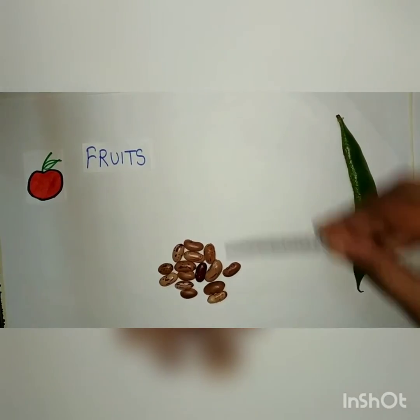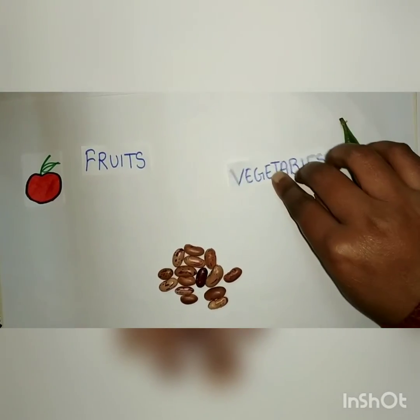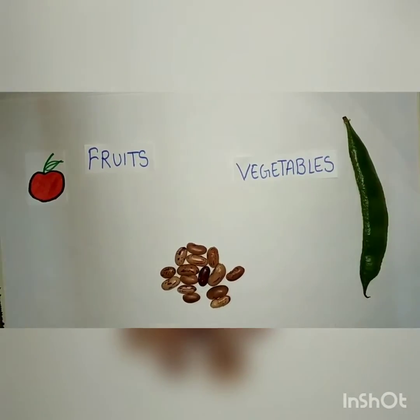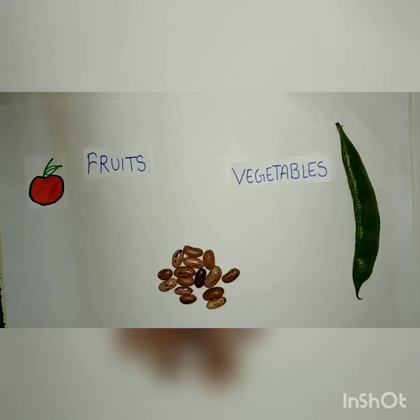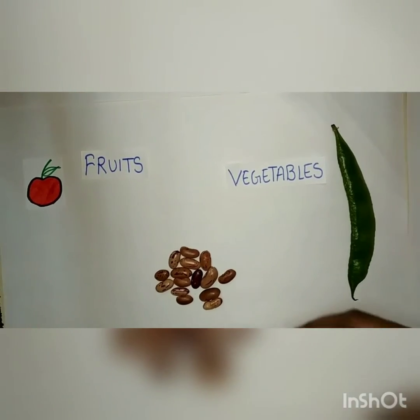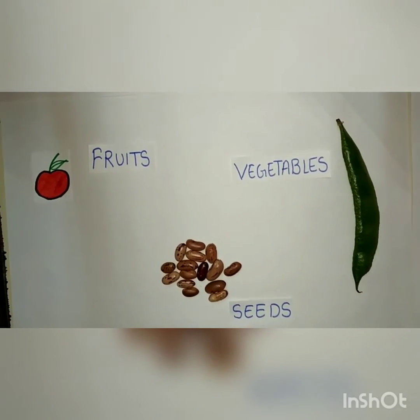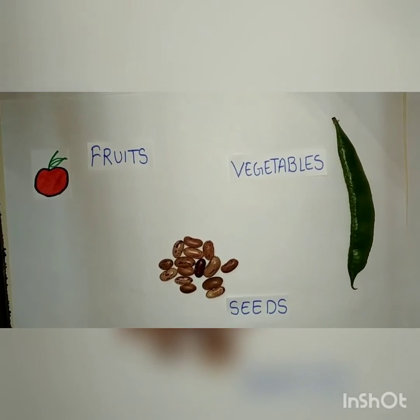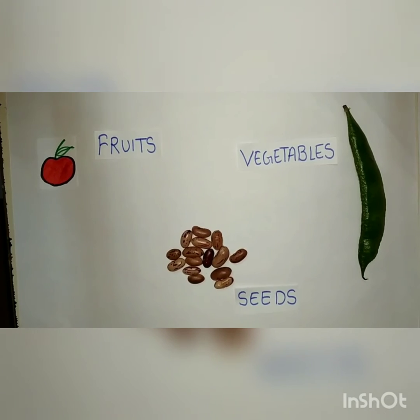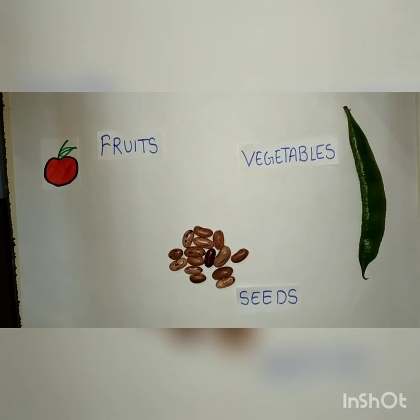Then we have vegetables like pea, beans etc. Then we have seeds like rajma, other pulses and seeds etc.